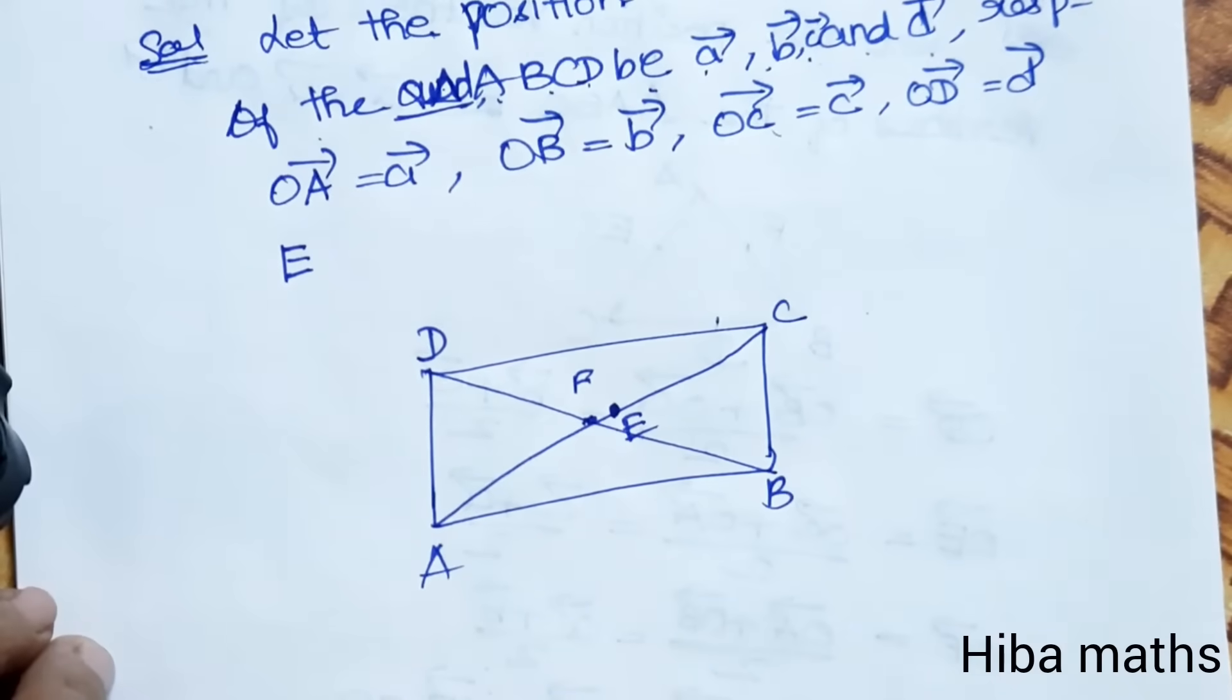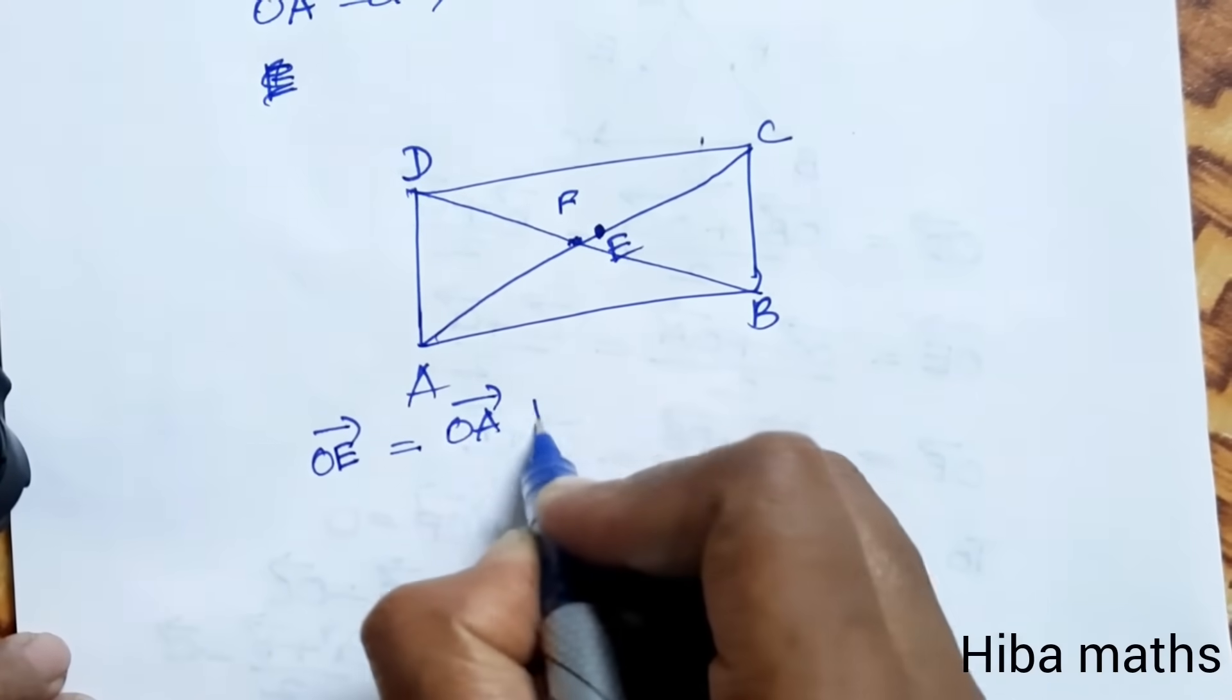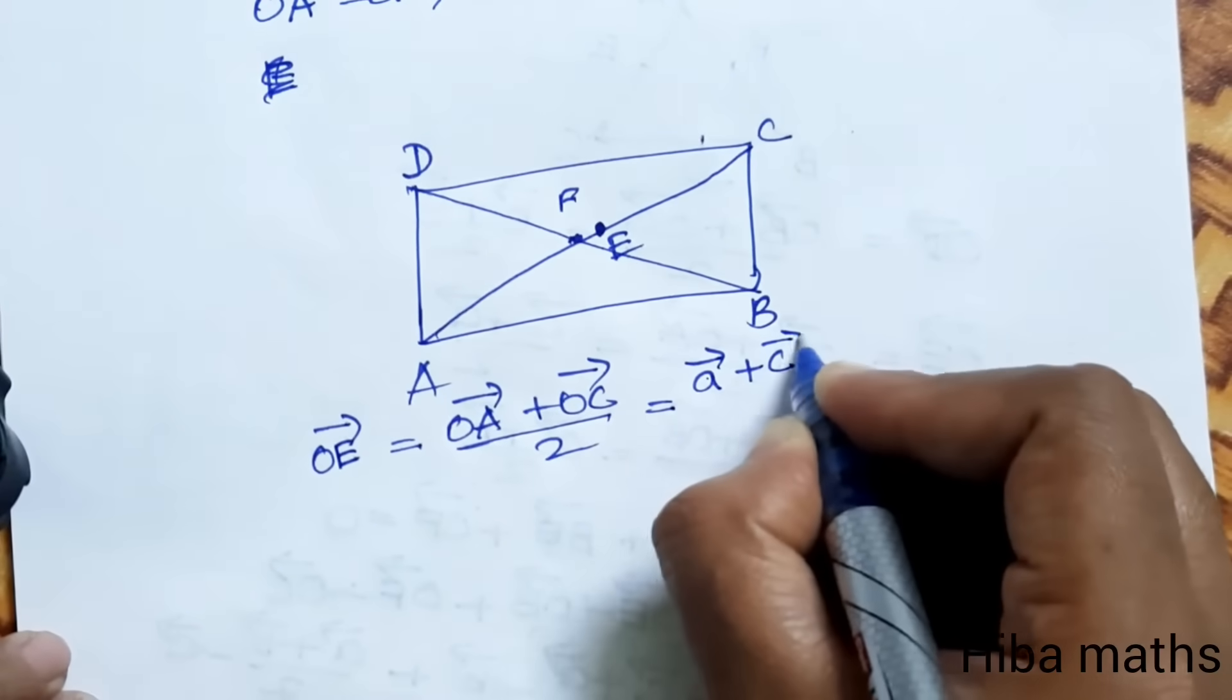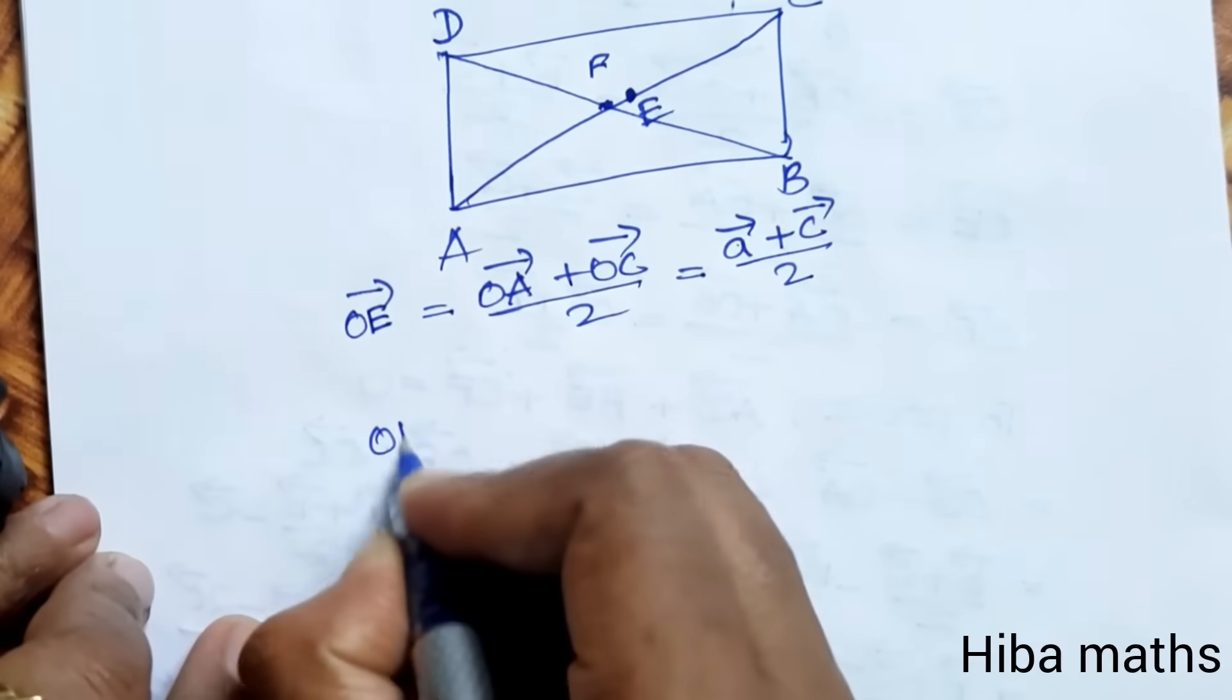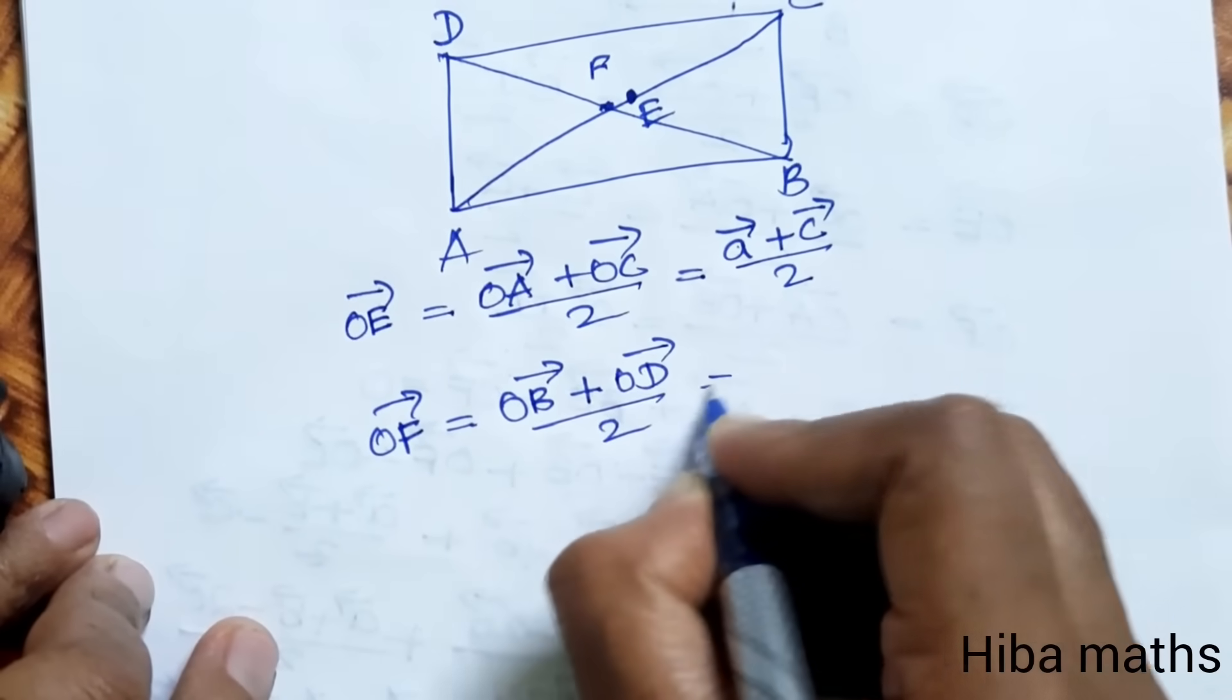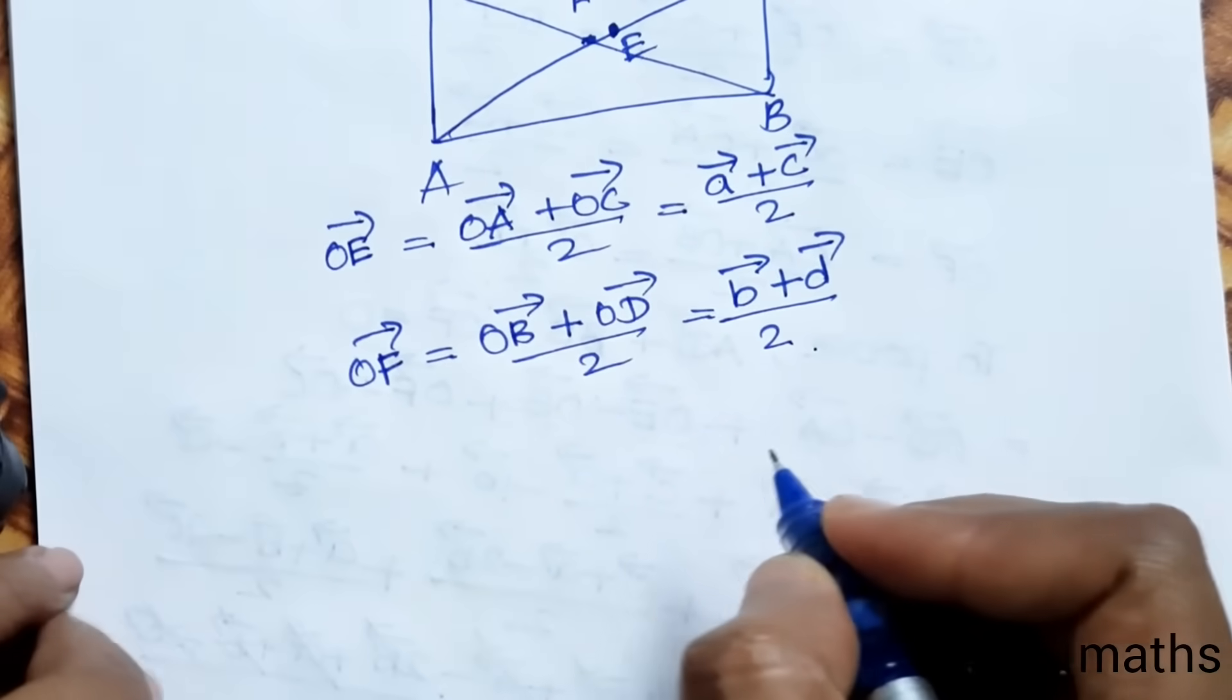So the E vector, OE vector, is the midpoint of AC. That's OA vector plus OC vector divided by 2, which is A vector plus C vector divided by 2. OF vector equals OB vector plus OD vector divided by 2, that is B vector plus D vector divided by 2.